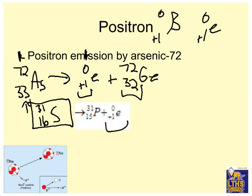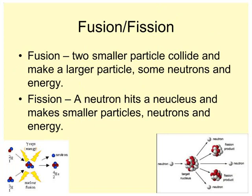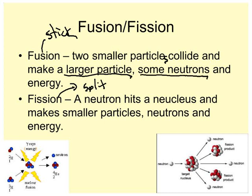Those are our main particles. And we're all done with that. Now we have fusion and fission. Fission is not fishing, although I wish it was. Fusion, and their definitions are basically pretty simple. Fusion is stick. Fission is split. And they both involve nuclei, neutrons. That's it. Fusion. Two smaller particles collide and make a larger particle. Some neutrons and energy. So they make three things. A larger particle, sticks together. Some neutrons. And energy. Usually heat. That's why the sun keeps us warm. Energy.